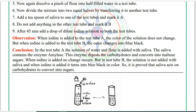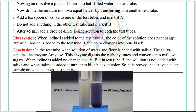Observation: When iodine is added to test tube A (with saliva), the color of the solution does not change. But when iodine is added to test tube B (without saliva), the color changes to blue-black.